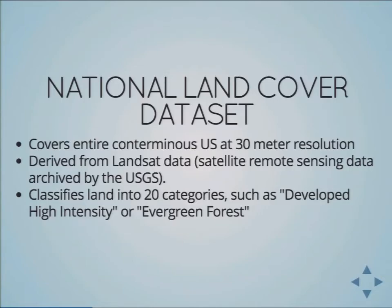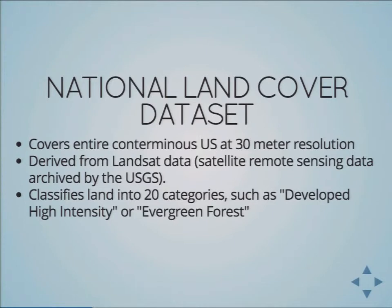It covers the entire contiguous US at 30-meter resolution, and it's derived from Landsat data, which is satellite remote sensing data archived by the United States Geological Survey. It classifies land into 20 categories, such as developed high intensity — so a city building would be high-intensity developed land — or evergreen forest. It doesn't just say these are trees; it says specifically this is this type of forest.